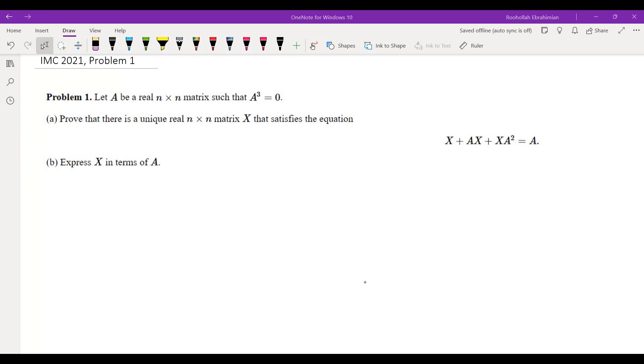Let A be a real n by n matrix such that A cubed is equal to 0. Prove that there is a unique real n by n matrix X that satisfies the equation X plus AX plus XA squared equals A, and express X in terms of A.